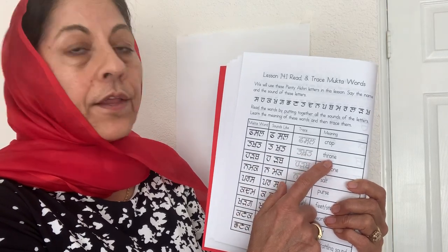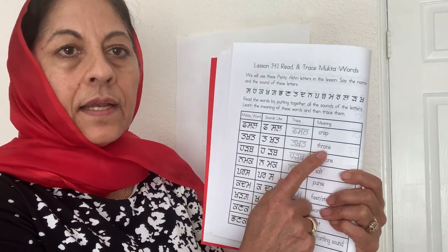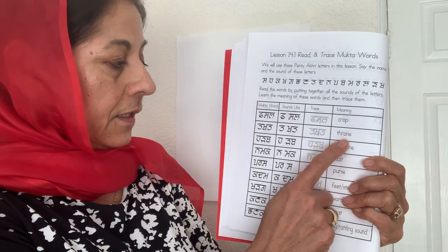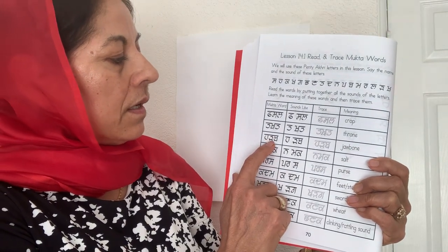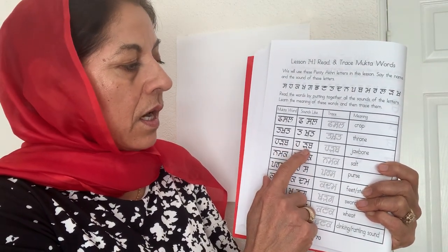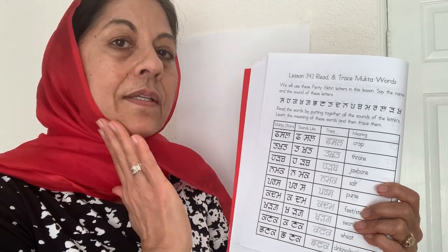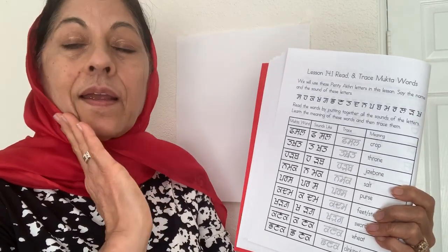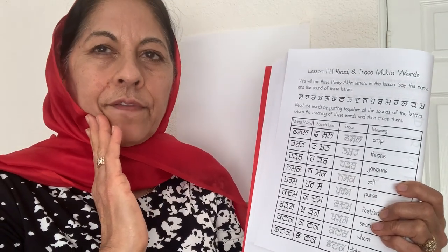Takhat is a throne. Usually the king or emperor sits on the takhat. Next is 'harab.' Harab is a job — it's a word used in villages, we mostly don't use it today, but you can just read it.